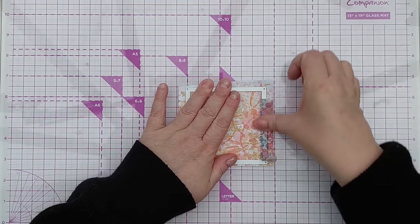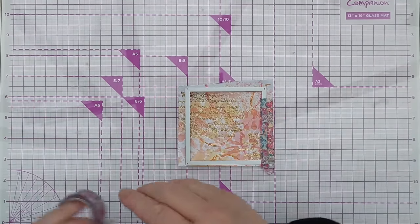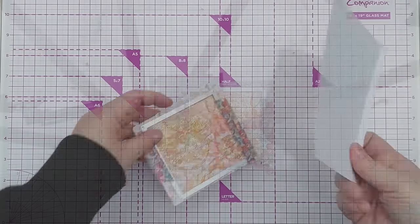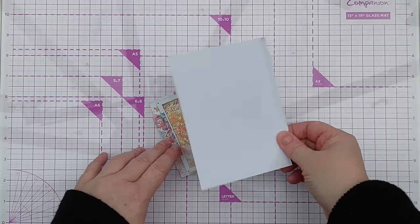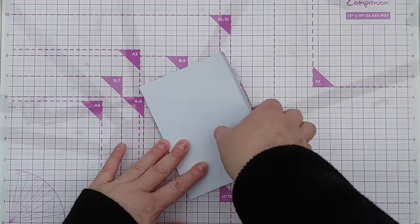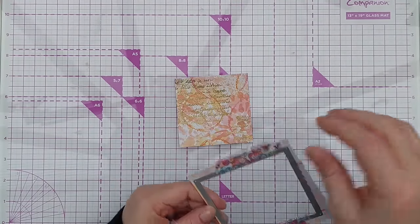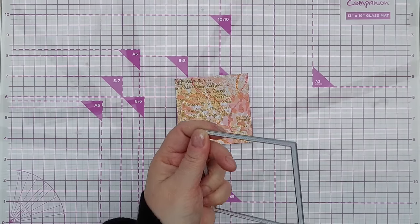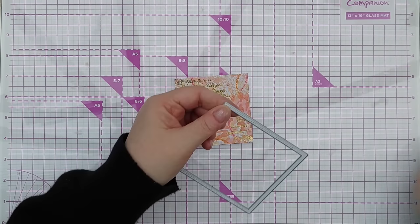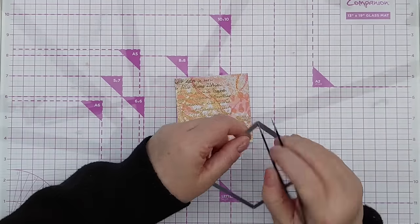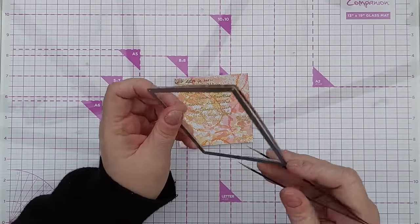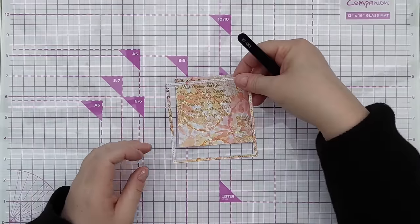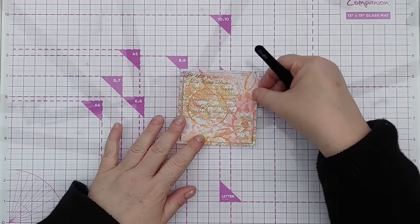So I'm going to pop that there, stick it down with a bit of washi tape and run it through my die cutting machine. I'm going to pop another piece of card over the front here just to protect that gold heat embossing. So there we go, that's cut the centre out. The frame itself is still in the die, and we can match that up like that.